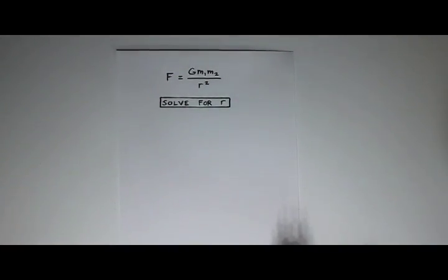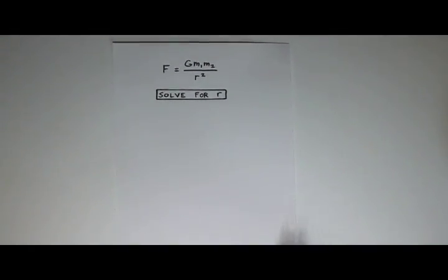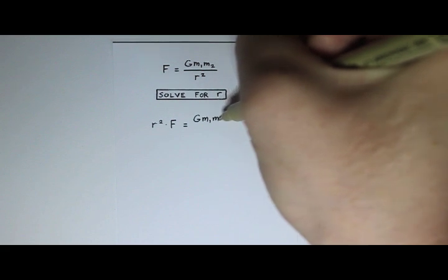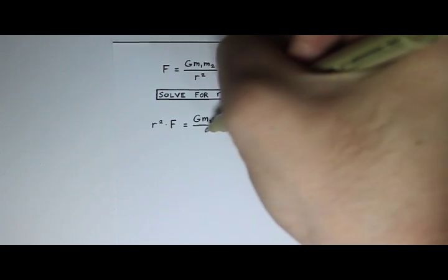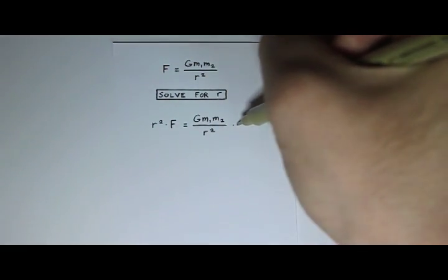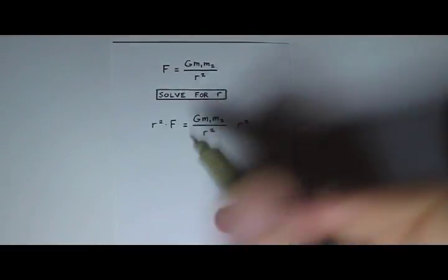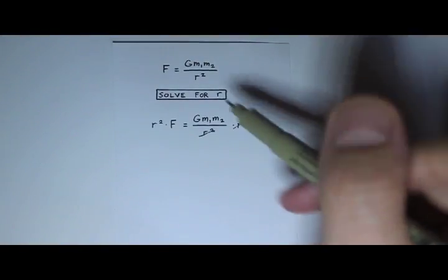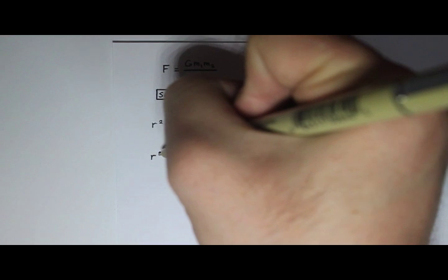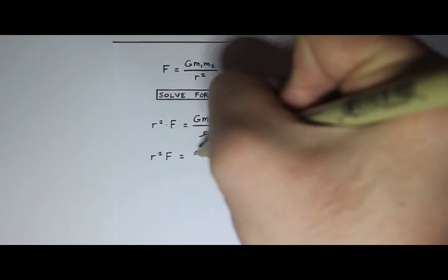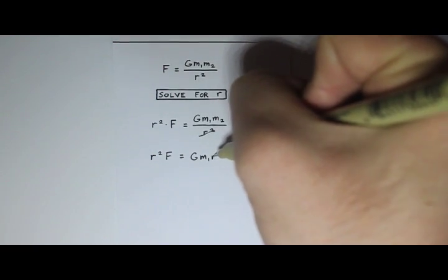Well, I want to get it out of the denominator first, so I'm going to multiply both sides by r squared. So I get r squared times f equals g m1 m2 divided by r squared times r squared. And the r squareds cancel. So I get r squared f equals g m1 m2.